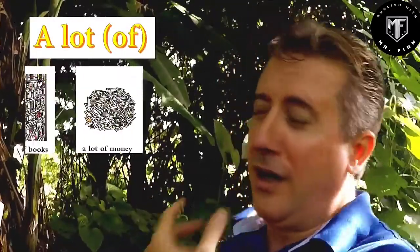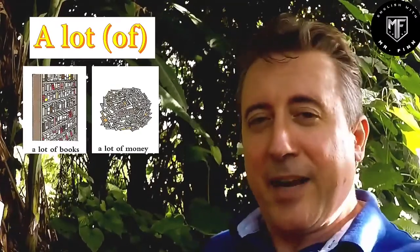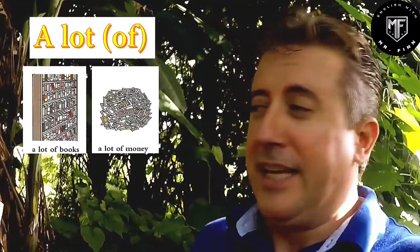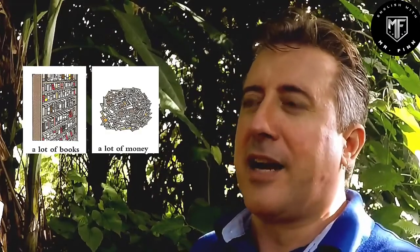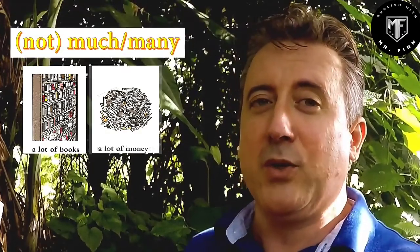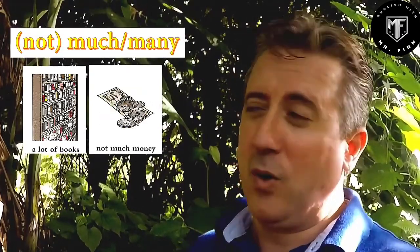Typically, when either a countable or uncountable noun is being referred to in a positive manner, or you're talking about a great deal of them, we're going to use 'a lot' — so 'a lot of money' or 'a lot of books.' The opposite, when what we're talking about is not a lot — not a big number or quantity — we use 'not much money' or 'not many books.'